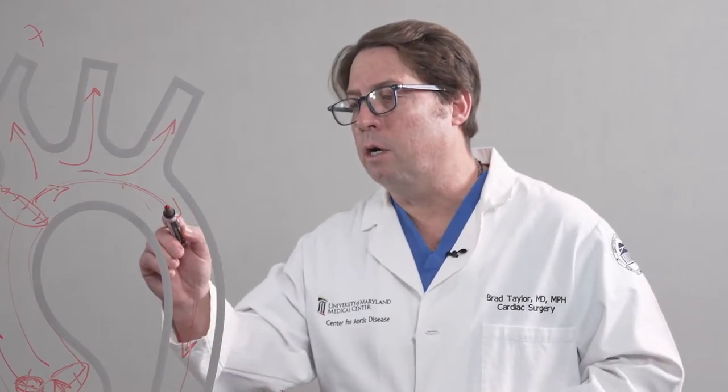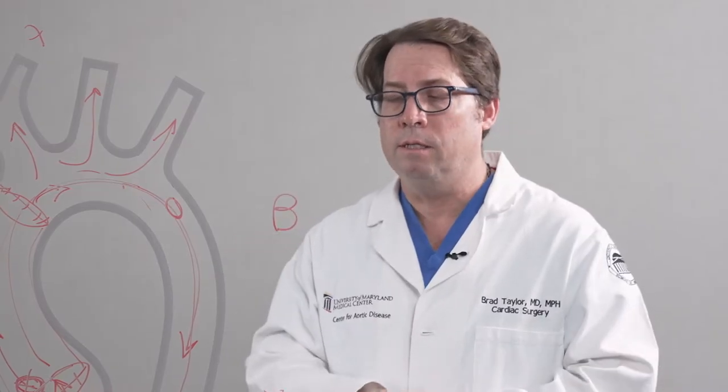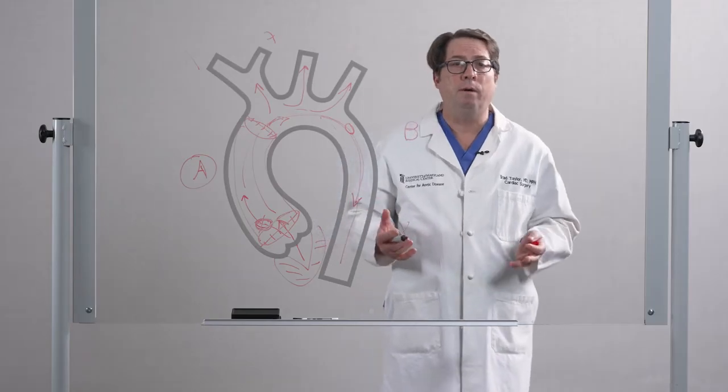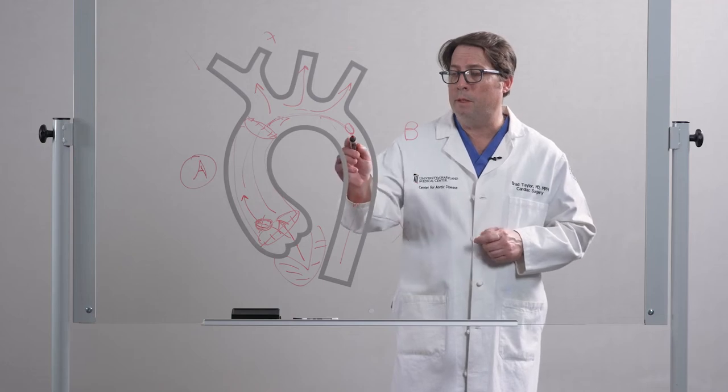If that tear occurs just after the blood vessel goes to your left arm, we call that a type B aortic dissection. Traditionally, type B aortic dissections can be managed with medical management and controlling blood pressure.